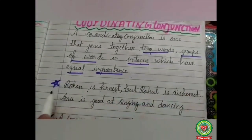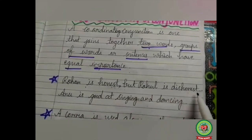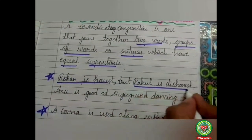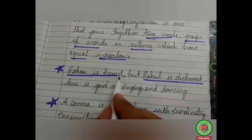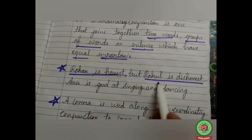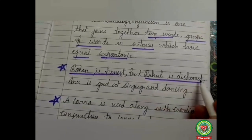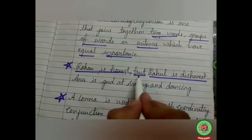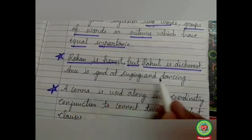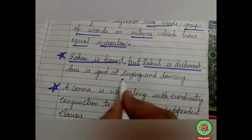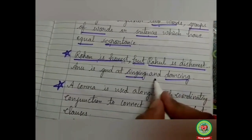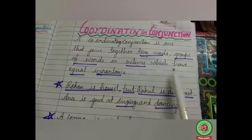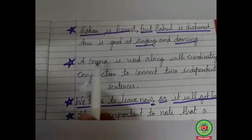What do we mean by equally important? For example: 'Rohan is honest but Rahul is dishonest.' Here there are two separate sentences — 'Rohan is honest' and 'Rahul is dishonest.' Each is an independent sentence with its own subject and predicate. We have joined these two sentences with the conjunction 'but.' Similarly, 'Anu is good at singing and dancing' — we have joined two words with the conjunction 'and.' So a coordinating conjunction joins together two words, groups of words, or sentences which have equal importance.